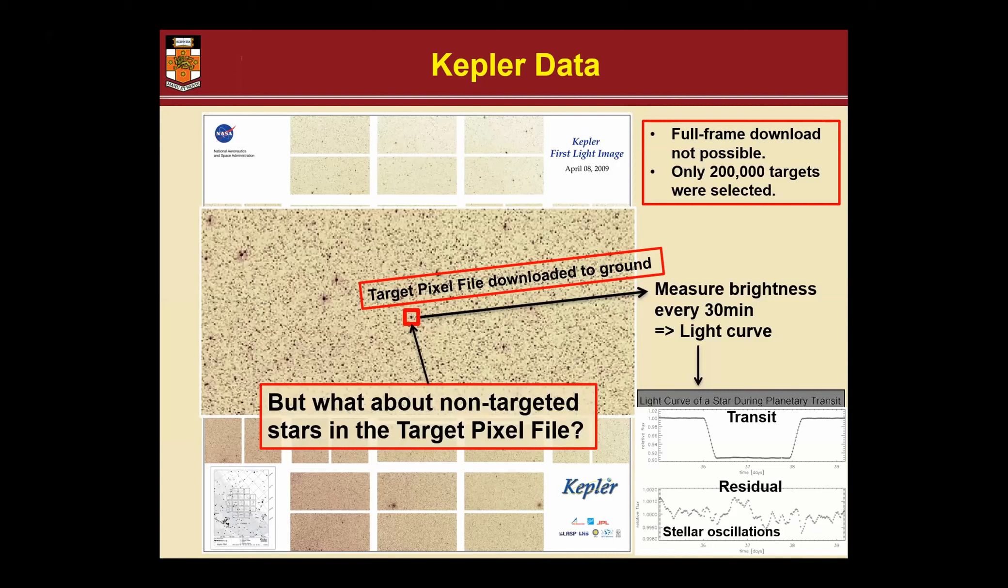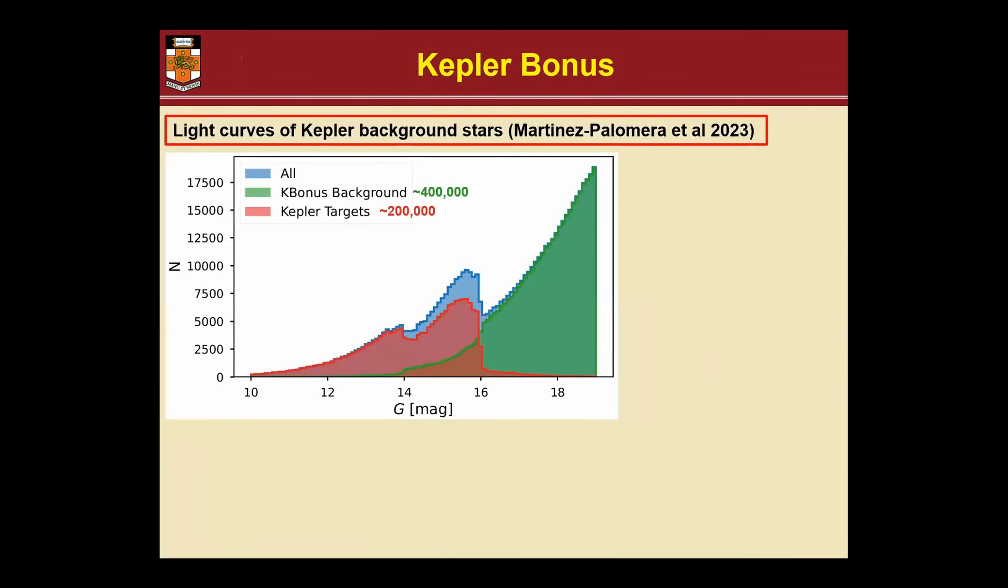But what about all the non-targeted stars in the pixel file? There were many people talking about, well, that's actually data we have on ground.